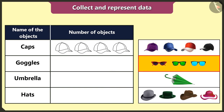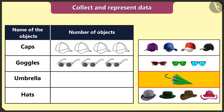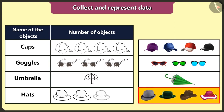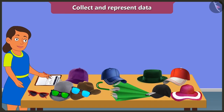There are four caps in the table, so I will draw four caps. There are three goggles, so I will draw three goggles. Then there is one umbrella, so I will draw a picture of an umbrella. And there are four hats, so I will draw four hats. It looks good.